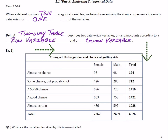We've got an example of a two-way table right here. This was a survey done among young adults. We looked at different genders and their responses to the question: what are your chances of getting rich as you get older? You can see the responses from male and female. They could say almost no chance, some chance but probably not, 50-50 chance, a good chance, or almost certain.